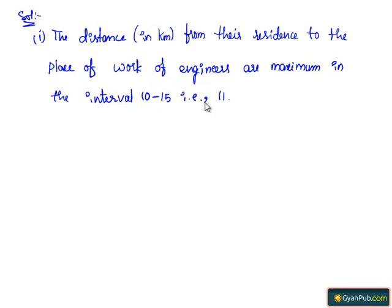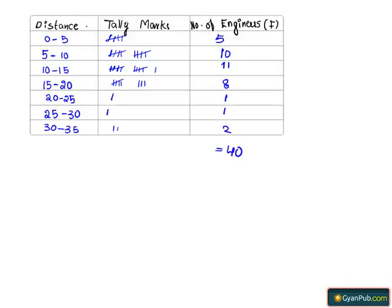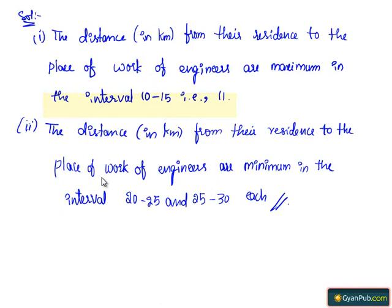Here it is 11. The maximum frequency is in the interval 10 to 15. The minimum distance is in the intervals 20 to 25 and 25 to 30. Therefore, the distance from residence to workplace of engineers are minimum in these two intervals.